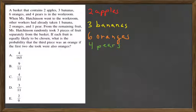When Ms. Hutchinson went to the workroom, other workers had already taken one banana, which leaves us with two. Two oranges, leaves us with four oranges, and one pear. Now we have three pears left. They didn't touch any of the apples, so we're still at two.